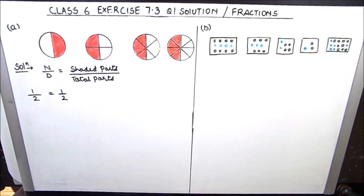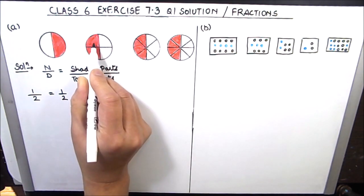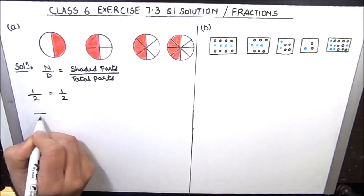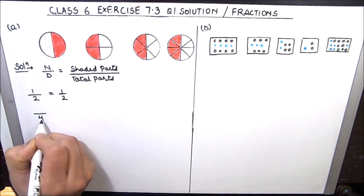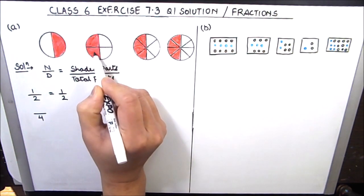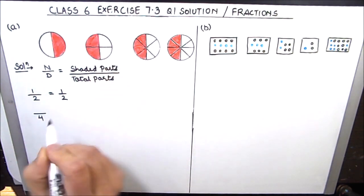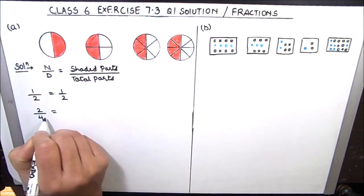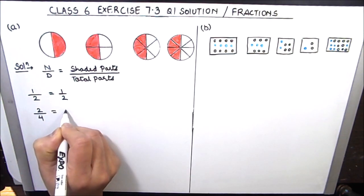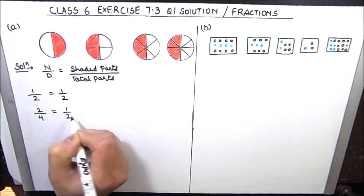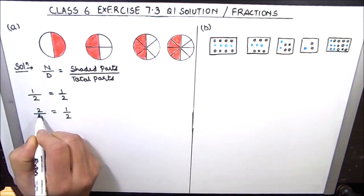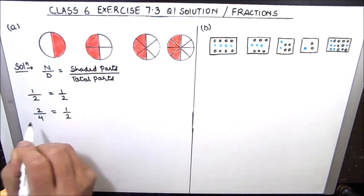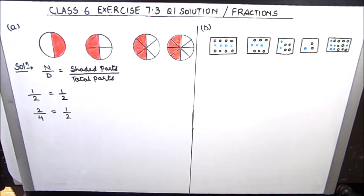The second circle has four parts — 1, 2, 3, 4. So the denominator will be 4 and out of 4, two parts are shaded. The fraction is 2 by 4, which can be reduced to 1 by 2 (2 times 1 and 2 times 2). So we can write 2 by 4 as 1 by 2. We must always make a practice of writing fractions in simplest form.